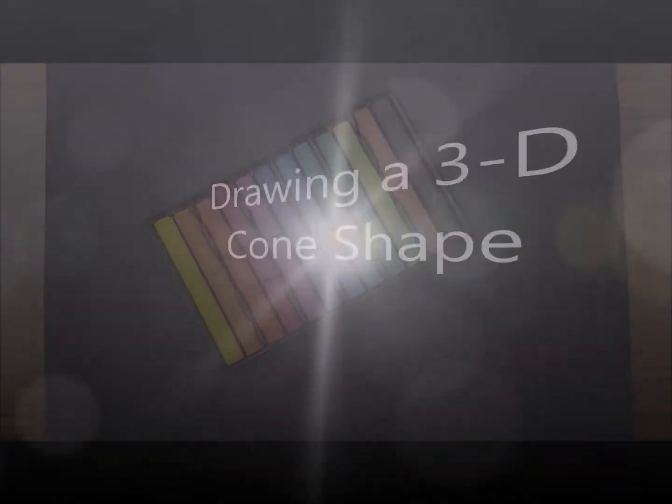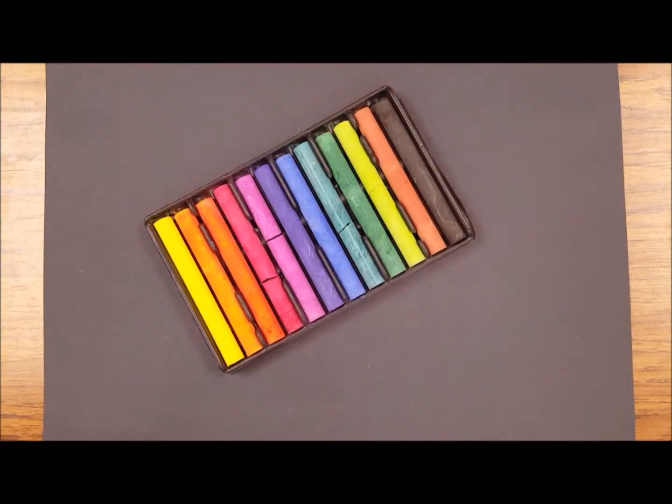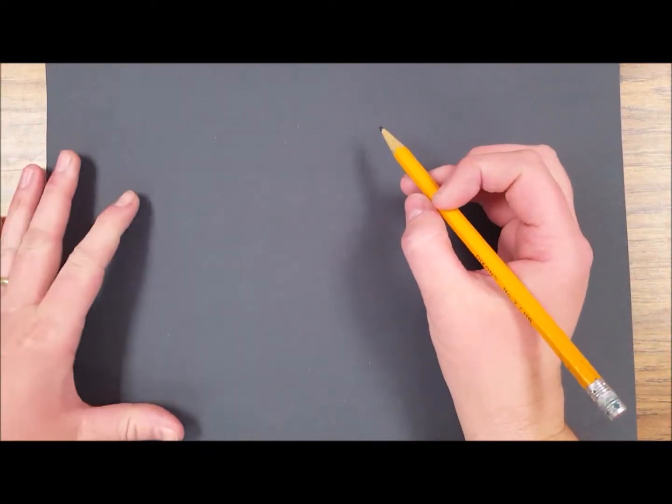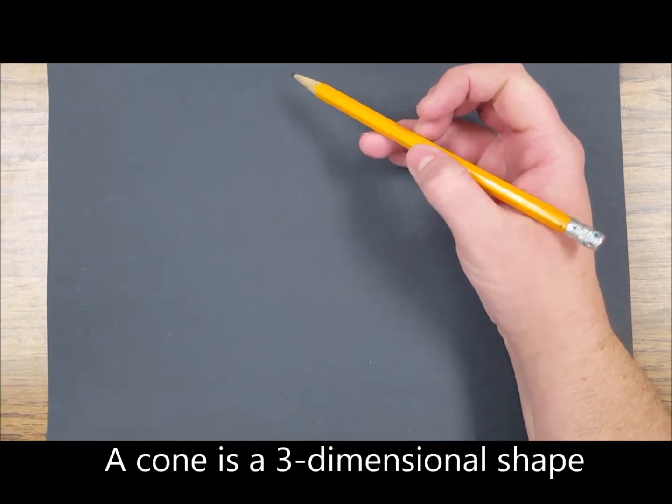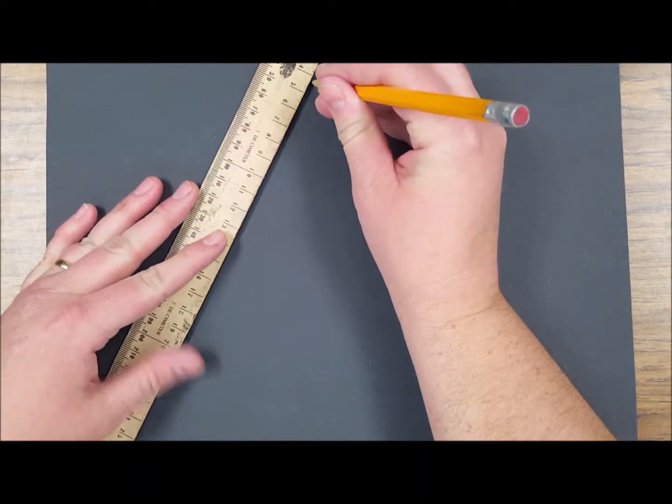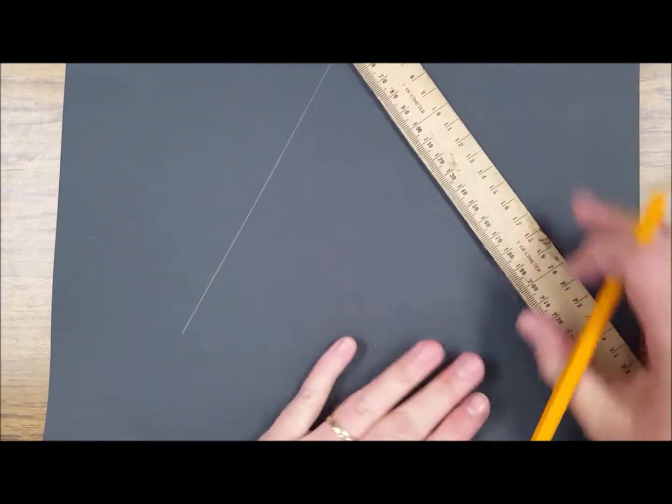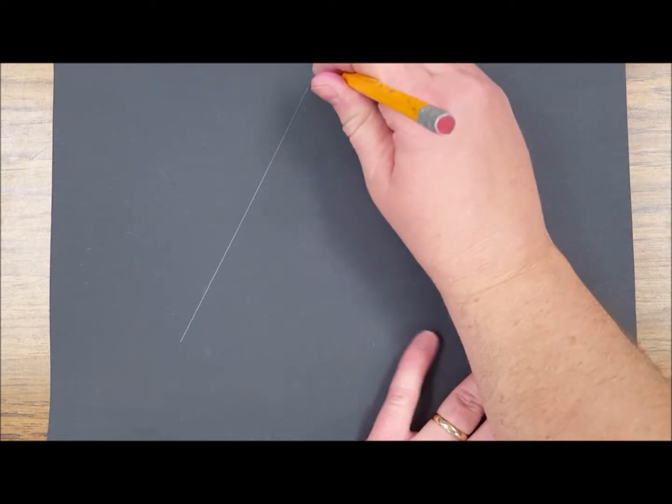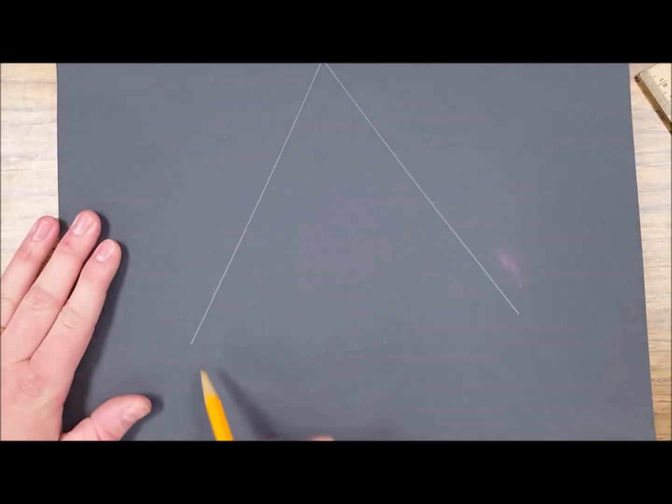For today's lesson we're going to be using chalk pastels. First thing you're going to do is start off by drawing your shape. Starting in pencil, I'm going to draw a cone. First I'm going to start off with my ruler. I'm going to make it nice and big. The cone shape is a triangle on top and the bottom is a curve.